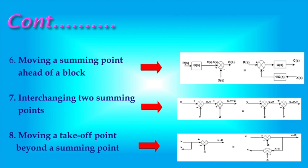Interchanging two summing points: The signal is X minus Y, and adding Z gives X minus Y plus Z. When these two summing points are interchanged, we get X plus Z and then minus Y, giving X plus Z minus Y — the same signal. So if these two summing points are interchanged, the signals are always the same.